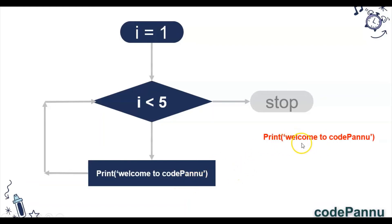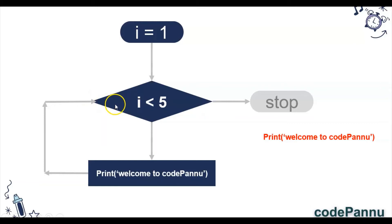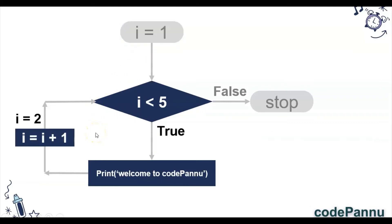Because it is a loop, it will do the same thing again and again. It will come back to the condition to repeat. Last time the value of i was 1, so after running the code block, Python adds 1 to i — so i equals i plus 1. The old value is overwritten with the new value, so now i has the new value 2. Coming to the condition again: is i less than 5? Yes, i is 2 and it is definitely less than 5, so the condition is true and it will run the code block again, printing 'Welcome to Codepand' the second time.